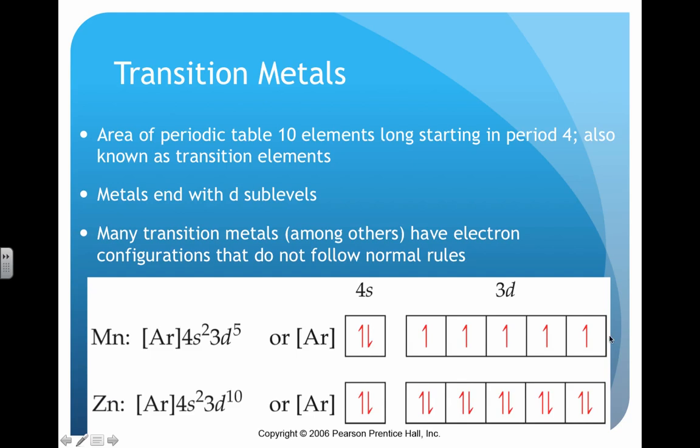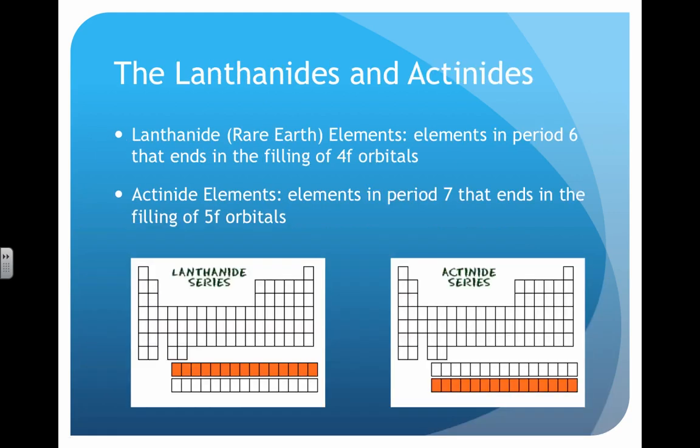Here are a couple examples: manganese through argon. These are some that do follow the rules, but many others don't. Lanthanide and actinide series are where the 4f elements are. These are in period six for lanthanides and period seven for actinides.